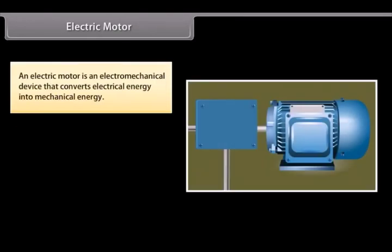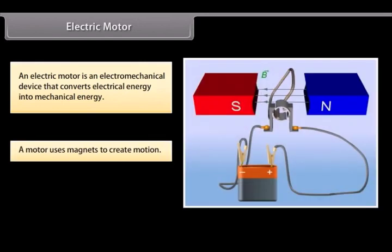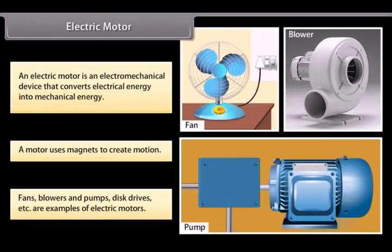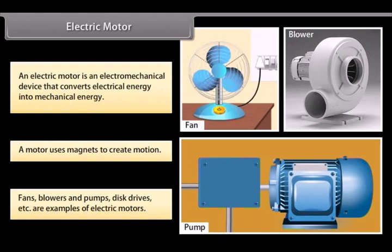An electric motor is an electromechanical device. It converts electrical energy into mechanical energy. Let us look at how electric motors work. A motor uses magnets to create motion. Inside an electric motor, the attracting and repelling forces of a magnet create rotational motion. Fans, blowers, pumps, and disc drivers are some examples of electric motors.